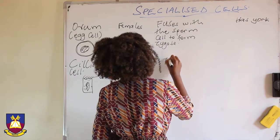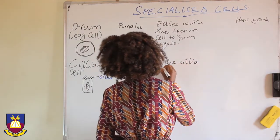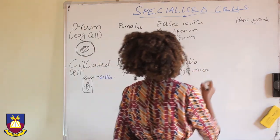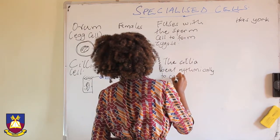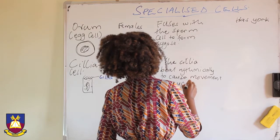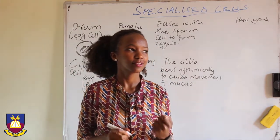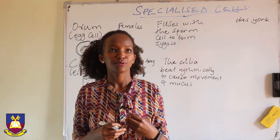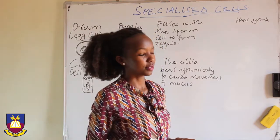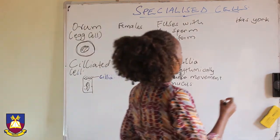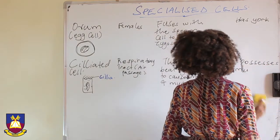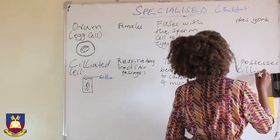By beating, the cilia move the mucus — along with the trapped particles — upward towards the mouth, after which it is swallowed. When this system is overwhelmed, that is when you get the urge to cough, so that you force the mucus upward, especially if it is a very big infection. So the adaptation is that it possesses cilia that beat the mucus.